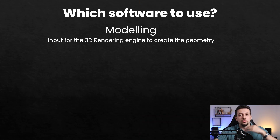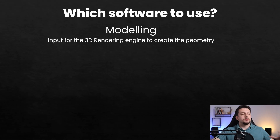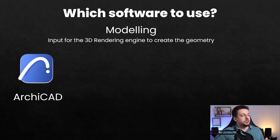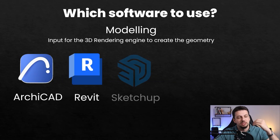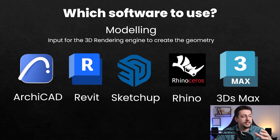Let's get started with the first question: which software to use. In order to choose a software for rendering, you first have to choose a software for modeling, which is basically where you input the 3D geometry. A few options are ArchiCAD, Revit, SketchUp, Rhino, or 3ds Max.